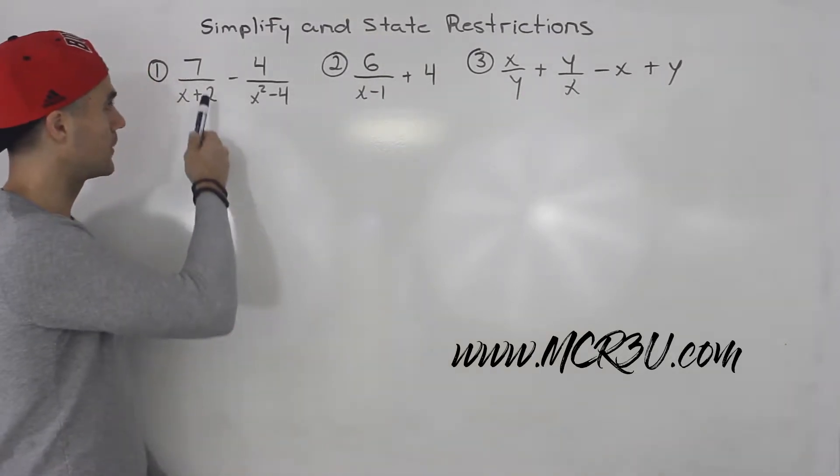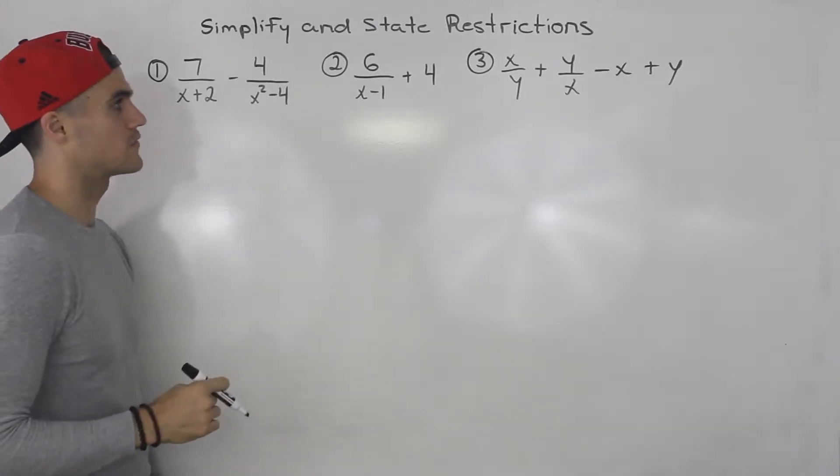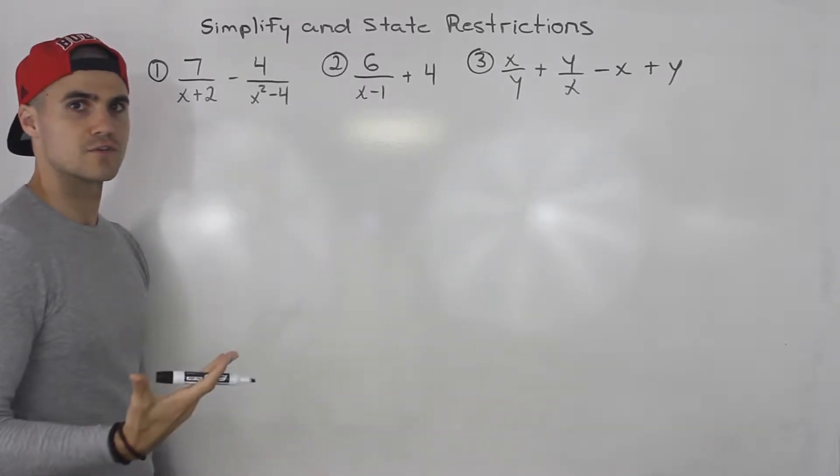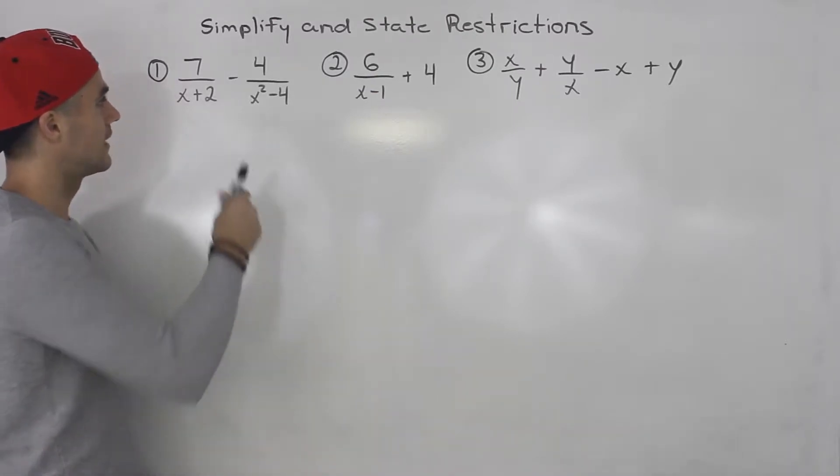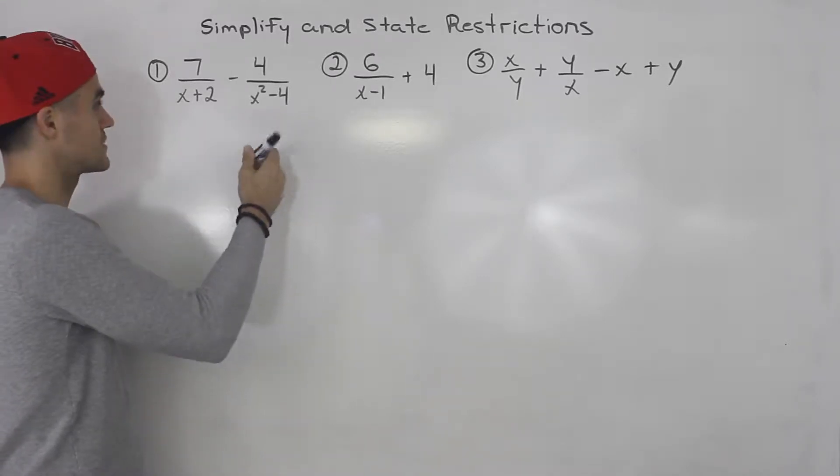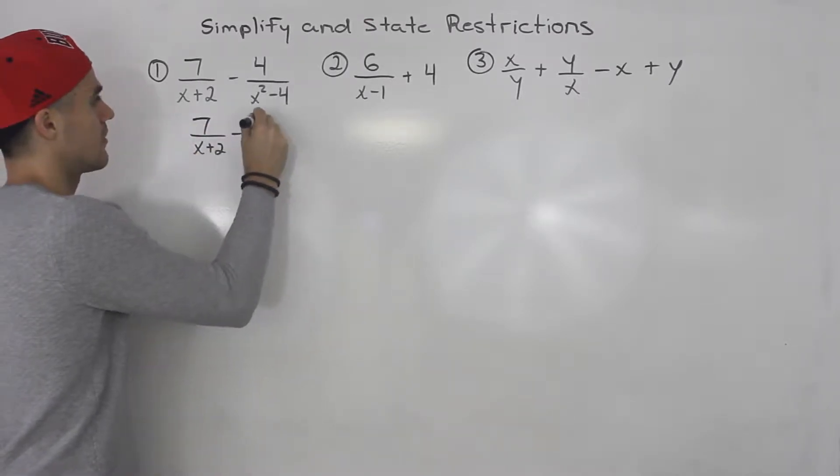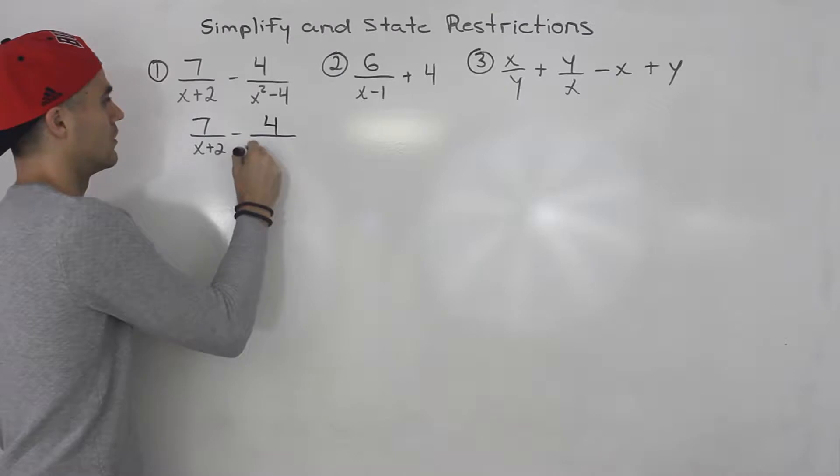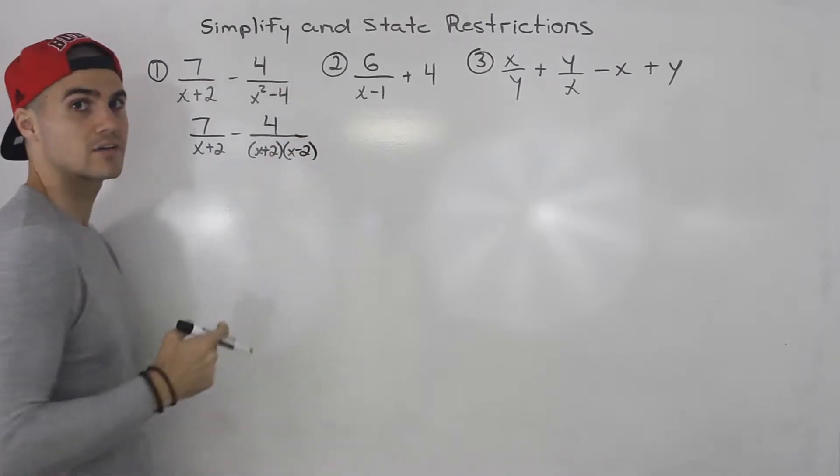Starting off with number one, we got 7 over x plus 2 minus 4 over x squared minus 4. So what's the first step? First step is we make sure that everything is factored. Notice we could factor this denominator, x squared minus 4, that's a difference of squares. So we could rewrite this as 7 over x plus 2 minus 4 over x plus 2 times x minus 2.